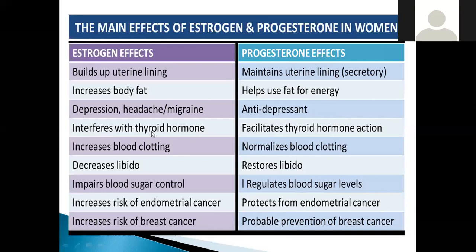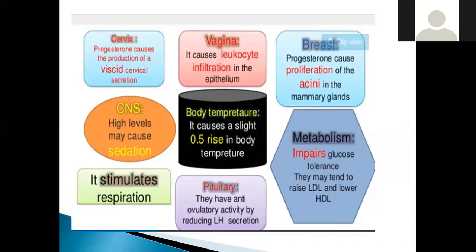In the body, naturally, estrogen and progesterone are maintained in a balanced form — this balance represents the beneficial physiological functions of progesterone therapy. Progesterone causes production of viscous cervical secretions. In the CNS, high levels may cause sedation. It also stimulates respiration. It causes a slight increase in body temperature of about 0.5 degrees.